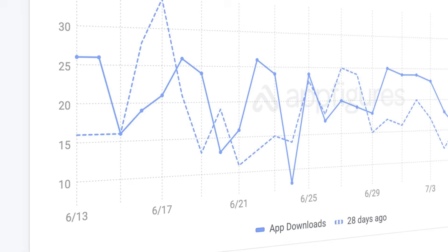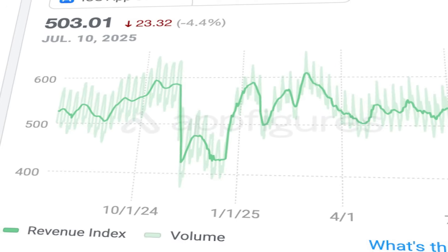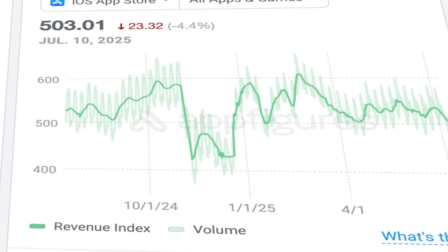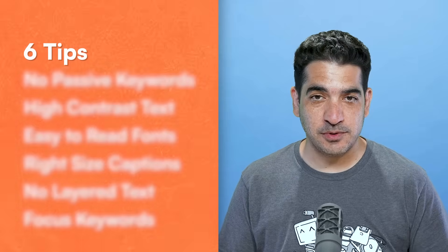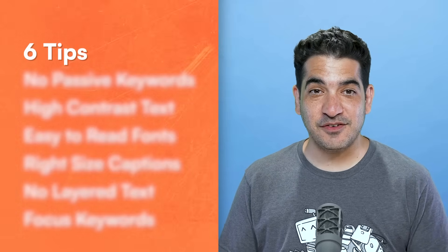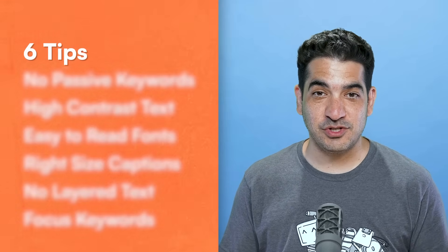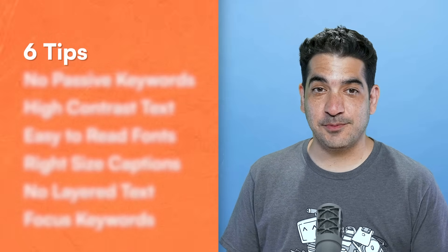Apple made the biggest change to the App Store search algorithm last month and didn't tell anyone. And it's very likely that your app was affected. I dove into our data, reverse engineered the change, and I'm happy to say I know what's going on and it's big. In this video, I'm going to share what I discovered and six practical tips that you should implement right away to take advantage of this new change and rank higher in the App Store.